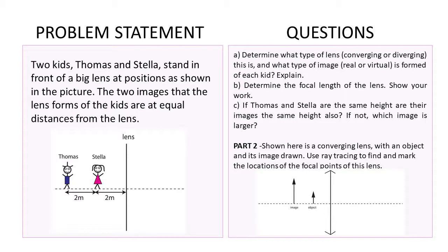Our questions for this are: A, what type of lens — converging or diverging — is this? And what type of image, real or virtual, is formed for each kid? Determine the focal length of the lens. And if T and S are the same height, are their images the same also? If not, which image is larger? Then we have part two of this problem that we'll come back to after we finish part one.